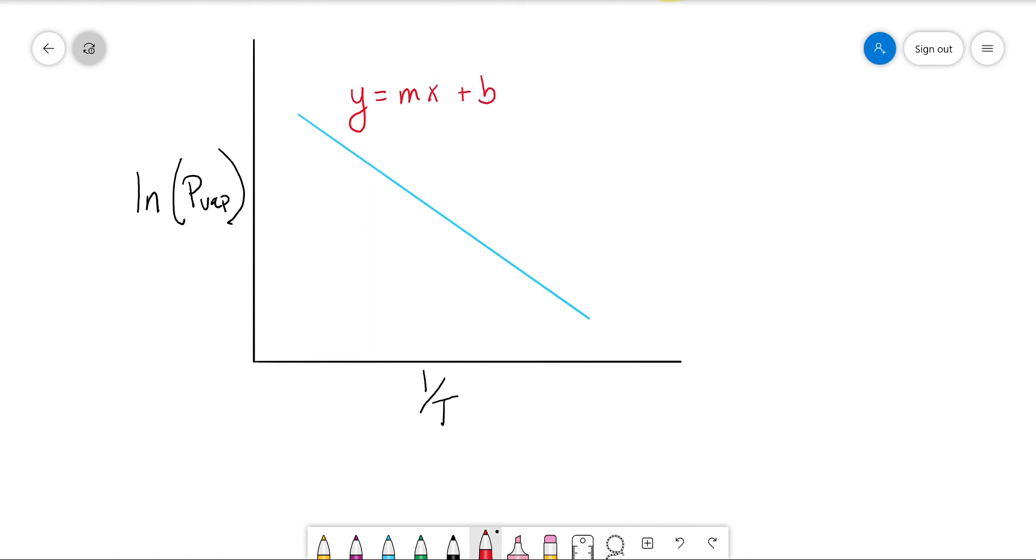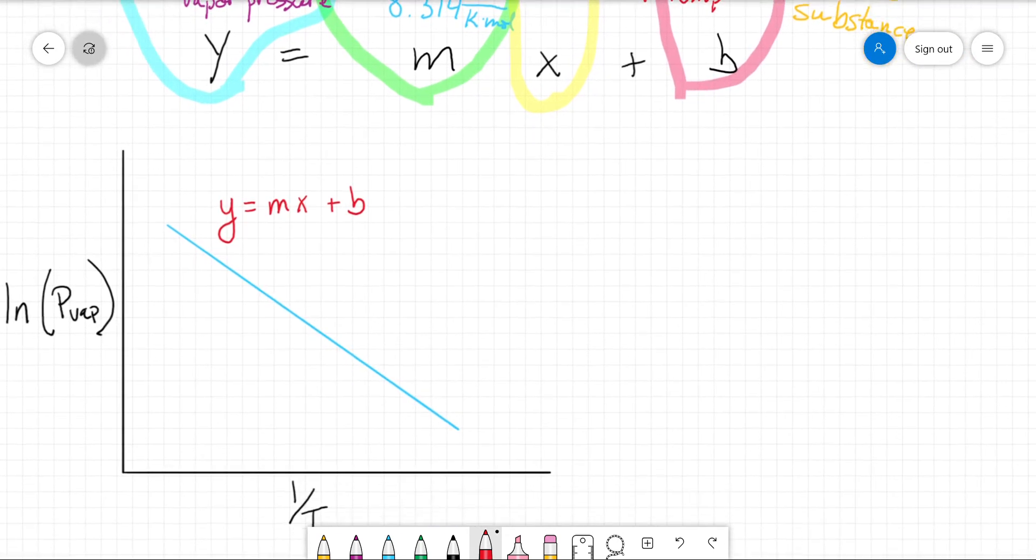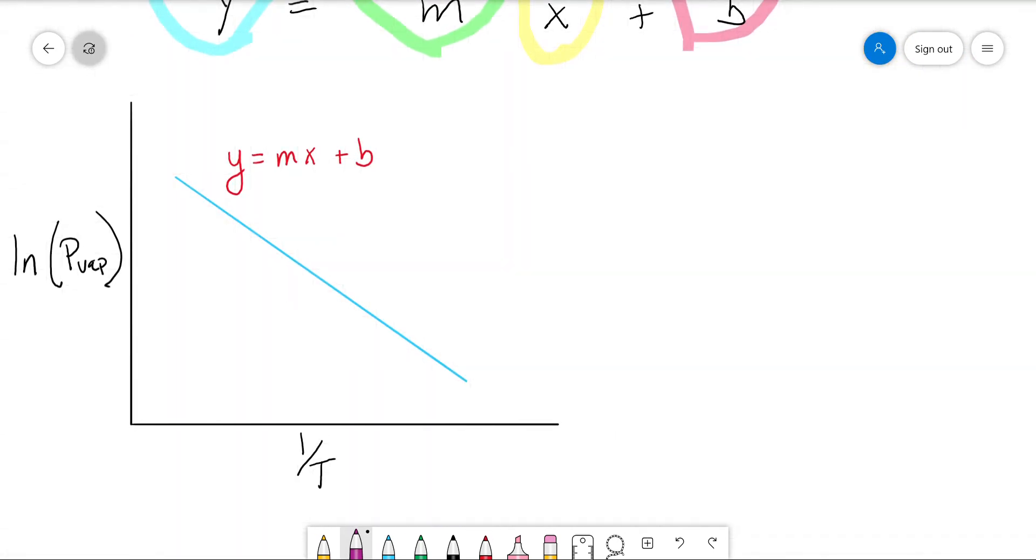And we can use M to solve for delta H vap because we know that M is equal to negative delta H vap over R. And so delta H vap is equal to negative M R. So you multiply the slope by the gas constant, and you can get the delta H vaporization for any substance.